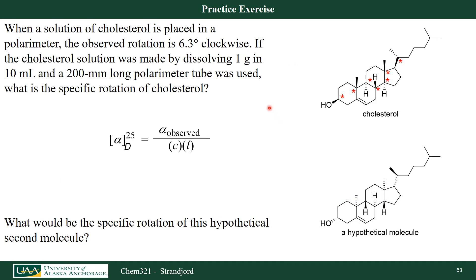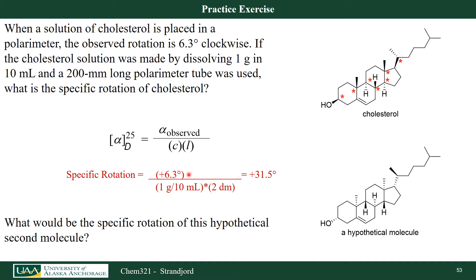Let's look at an example with cholesterol, which has seven chiral carbons. If I take one gram in a 10 milliliter solution and use a 200 millimeter long polarimeter, I measure an observed optical rotation of 6.3 degrees. Correcting for path length and concentration — observed rotation of 6.3 degrees, concentration of 1 gram per 10 milliliters, and path length of 2 decimeters — my specific rotation is 3.15 degrees.